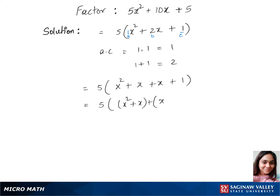squared plus x in one set, plus x plus one in another. And now we have 5 times, let's factor out x from the first set, so that's x times x plus 1, plus the second set remains the same, let's keep that x plus 1.